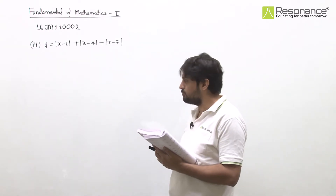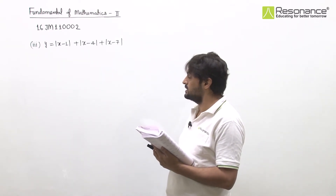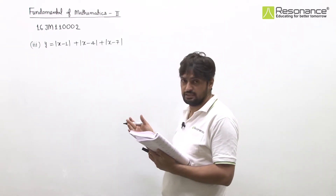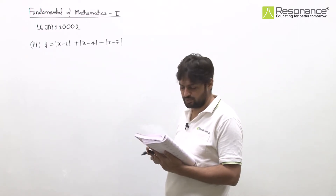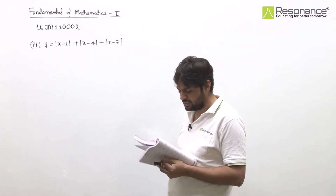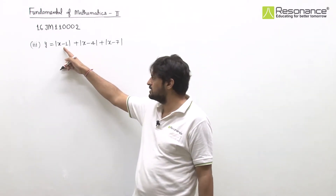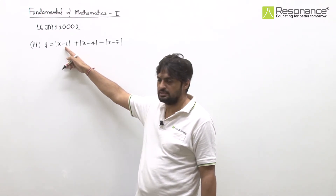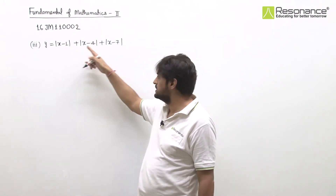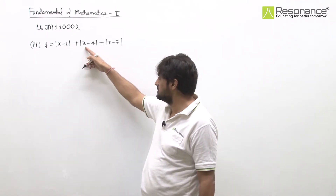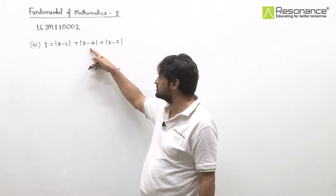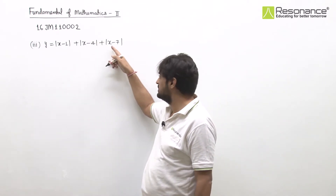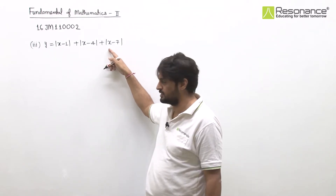We need to draw the labeled graph. We can fully define it or find turning points directly. The turning point for the first term is x = 1; for the second term it is x = 4 (zero at 4, positive beyond, negative before); and for the third term it is x = 7.